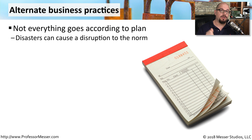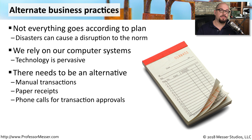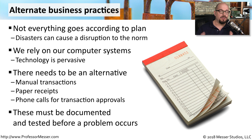It's also a good idea to have an alternative business practice. We know that when disasters strike, everything can be disrupted, even the technology we rely on every day to perform our business processes. So there needs to be some type of alternative. If you're processing transactions on a computer or over the network, maybe you want to be able to process those transactions on paper and provide paper receipts. Instead of automated credit card approvals, you may have to pick up a phone and manually process those approvals. The time to roll out this alternative business practice is not when a disaster occurs — you want to have gone through the practice and understanding of exactly what it takes to keep everything up and running, even if a disaster has occurred around you.